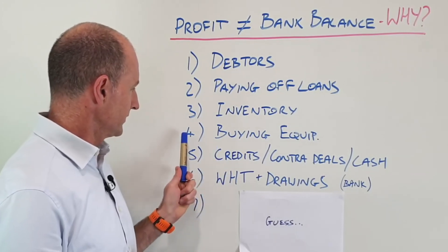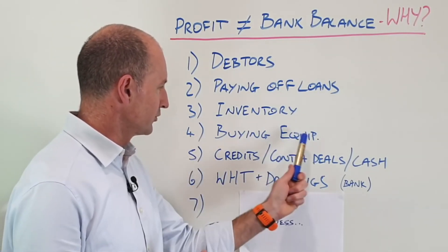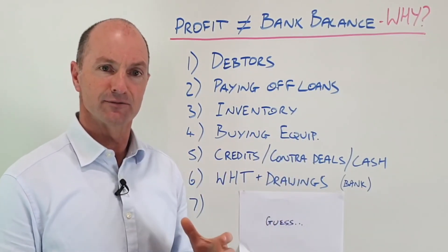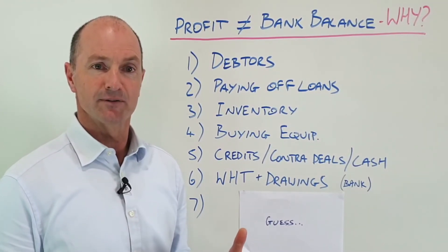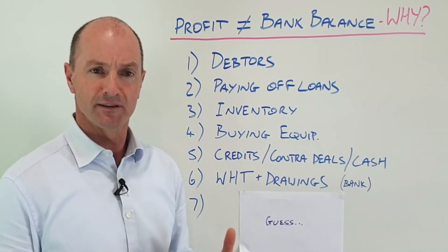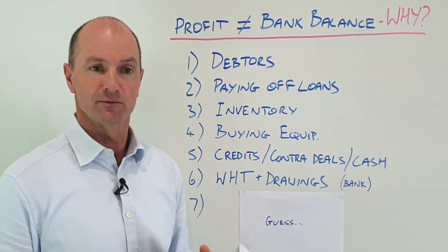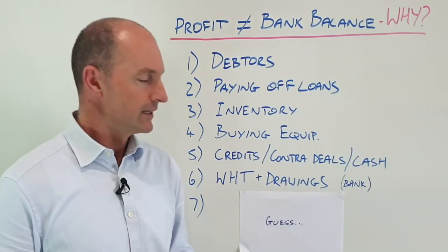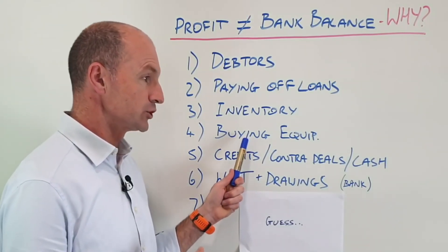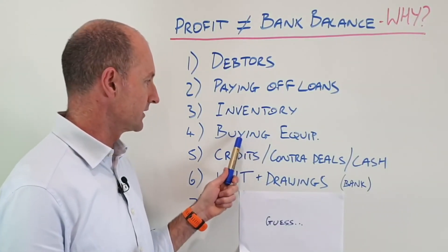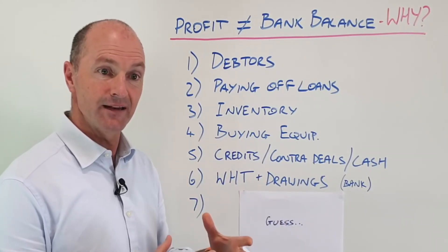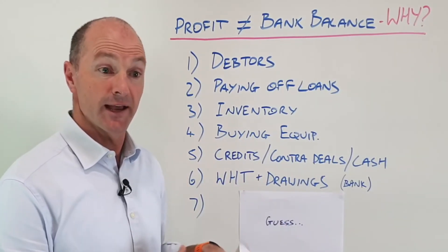The next one is equipment purchases. You might be buying a lot of tools and machinery. Start-up businesses tend to keep buying more tools and equipment they need to grow. These should be going on your balance sheet as an asset, as opposed to being expensed. So that's where your cash is going.